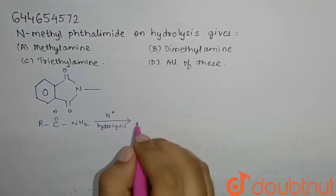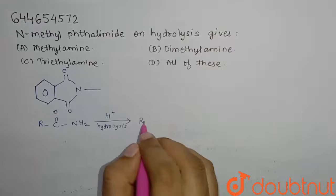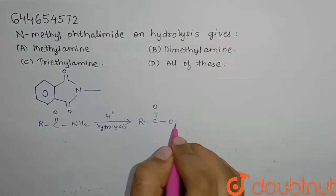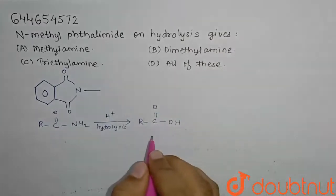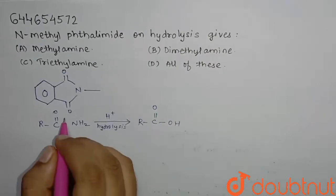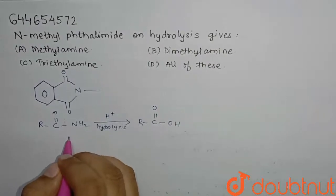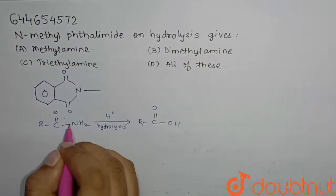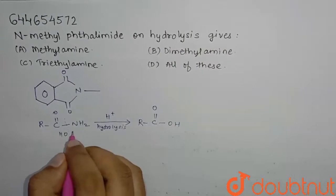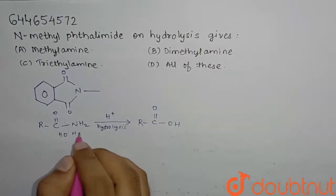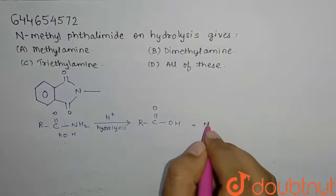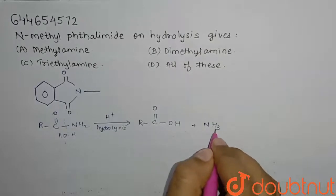It gives us R-C double bond O, OH. What happens here is this breaks and our OH group is attached here and the hydrogen group is attached here. Therefore, we get R-C double bond O, OH plus NH3.